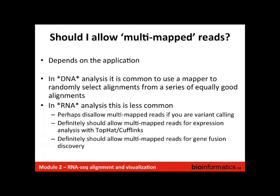Another common question: should I allow multi-mapped reads — reads that map unambiguously to more than one location in the genome? In DNA analysis, it's common for mappers to randomly select from equally good alignments, but this is not ideal in RNA. If you're doing variant calling, you might disallow multi-mapped reads. But if you're using the Tuxedo pipeline with TopHat and Cufflinks, you should definitely allow multi-mapped reads because that pipeline assumes that kind of alignment. For gene fusion discovery, you also want to allow multi-mapped reads.